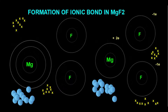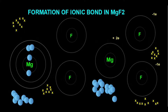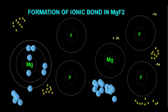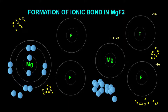In the electron dot structure of magnesium: in the K shell there are 2 electrons, so we place 2 electrons in the K shell. In the L shell there are 8 electrons, so we keep 8 electrons in the L shell. In the M shell there are 2 electrons, so we keep 2 electrons in the M shell. This is the electron dot structure for magnesium.